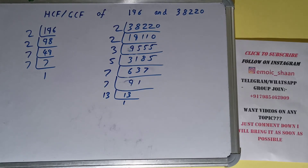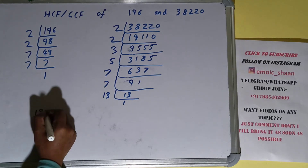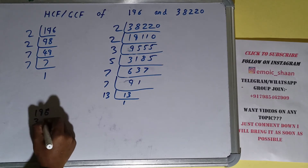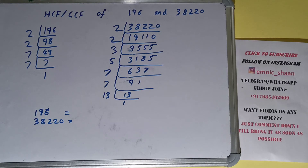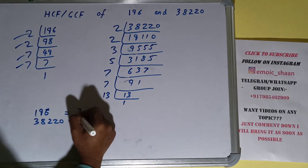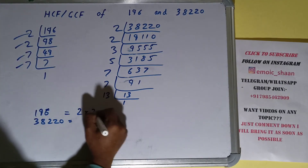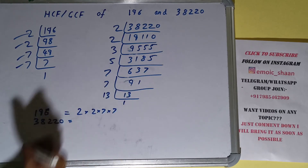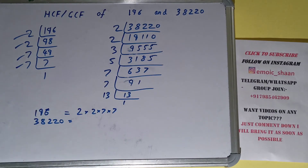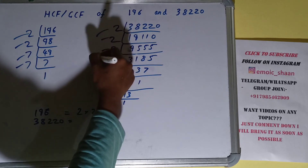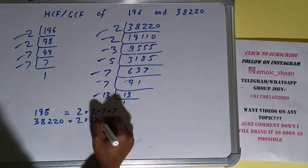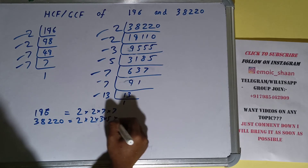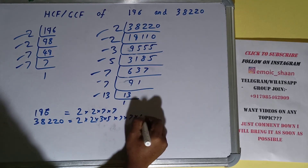The next thing we need to do is write down each number with its respective prime factors. For 196, the prime factors are 2 × 2 × 7 × 7. For 38220, the prime factors are 2 × 2 × 3 × 5 × 7 × 7 × 13.